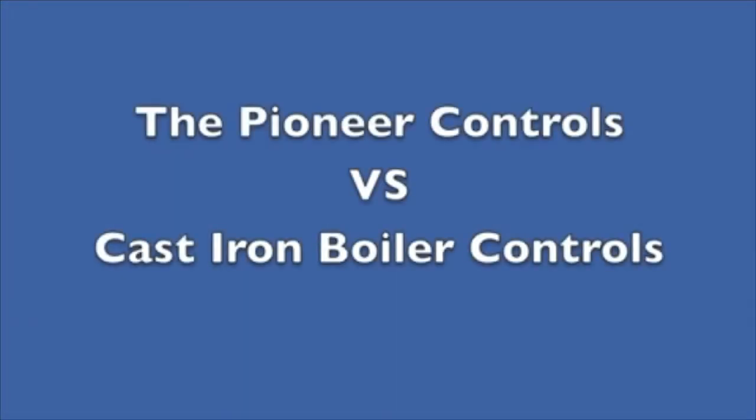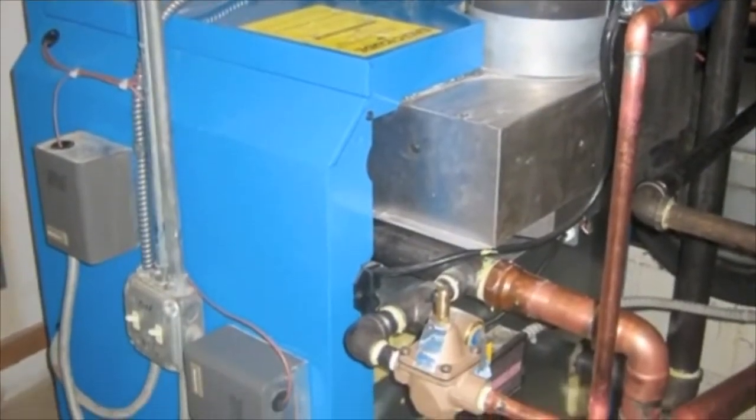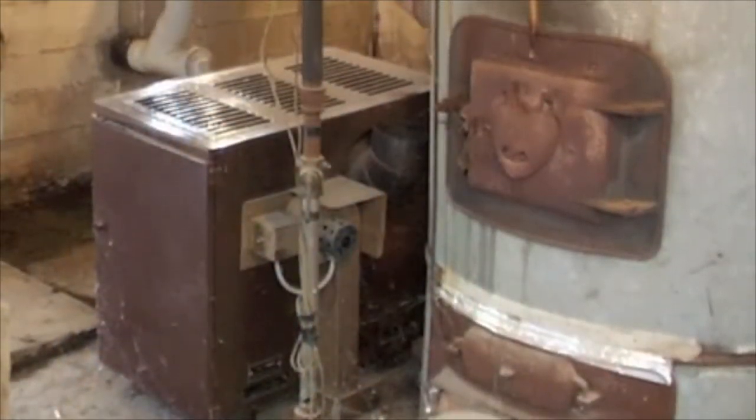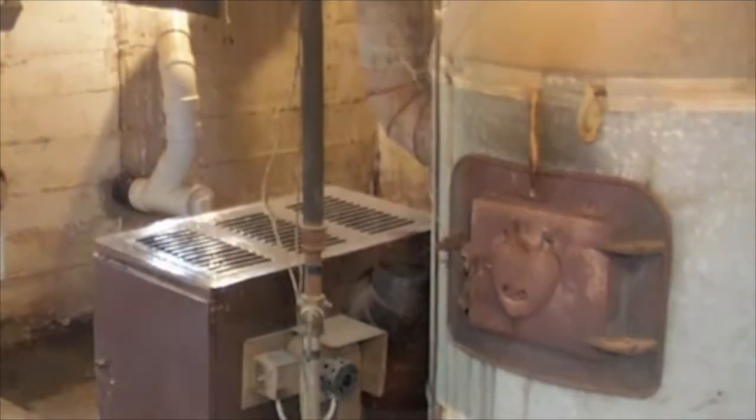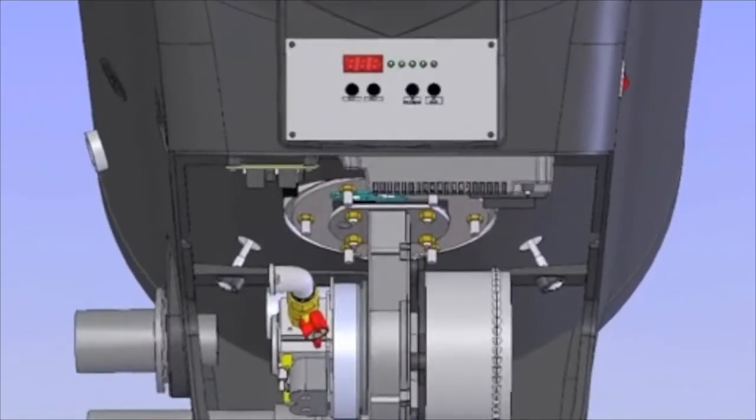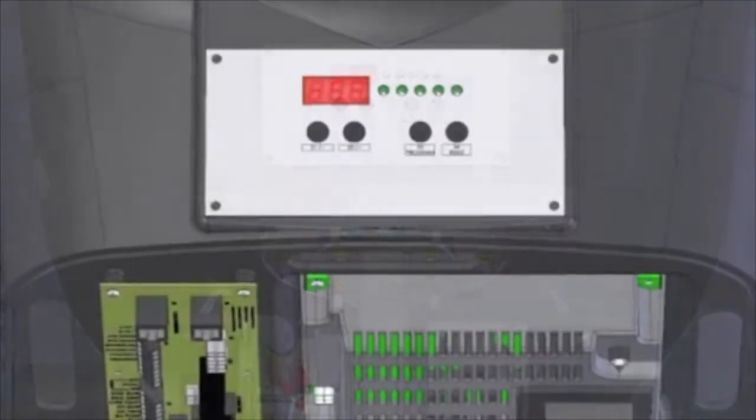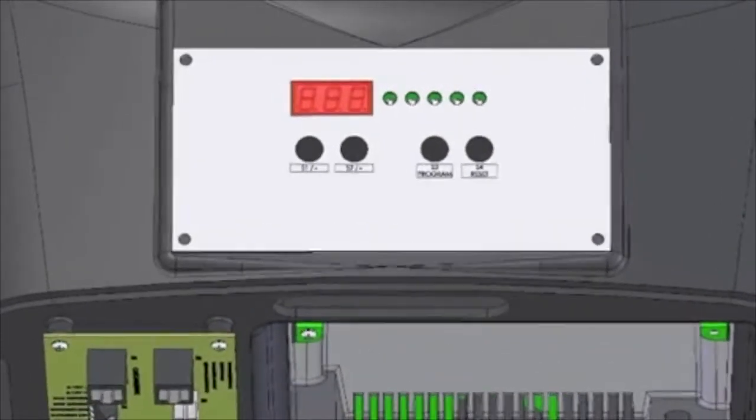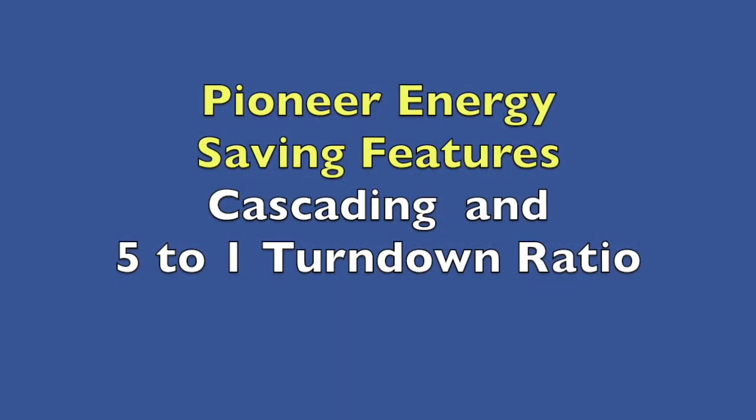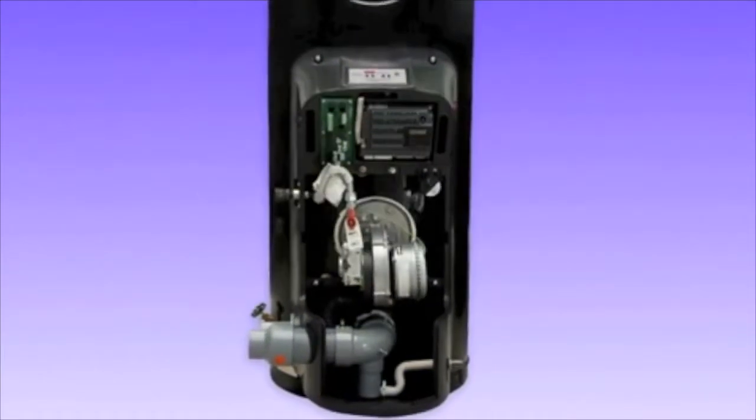Cast iron boilers typically employ older on-off or stage combustion designs. This technology does not allow the unit to fully modulate. The controls are basic compared to the Pioneer's 926 platform. Although some have outdoor reset and other capabilities not typical on atmospheric units, they lack energy saving features which are standard on the Pioneer.